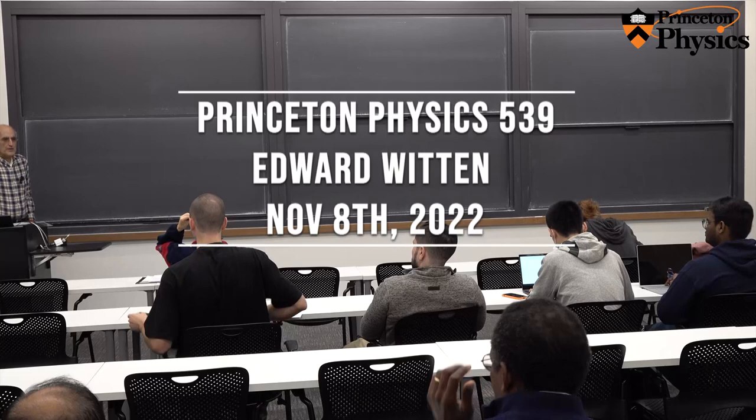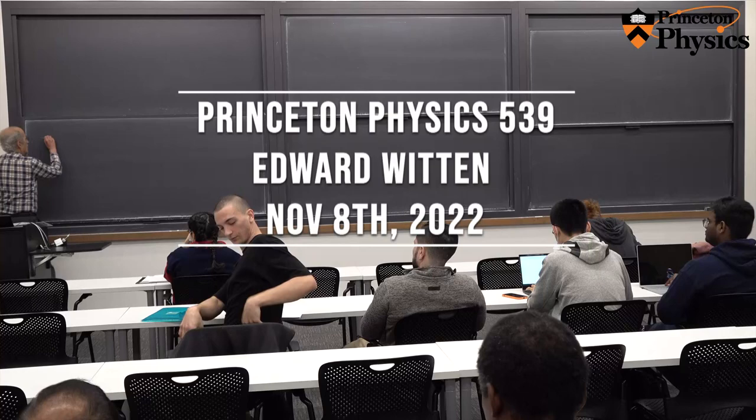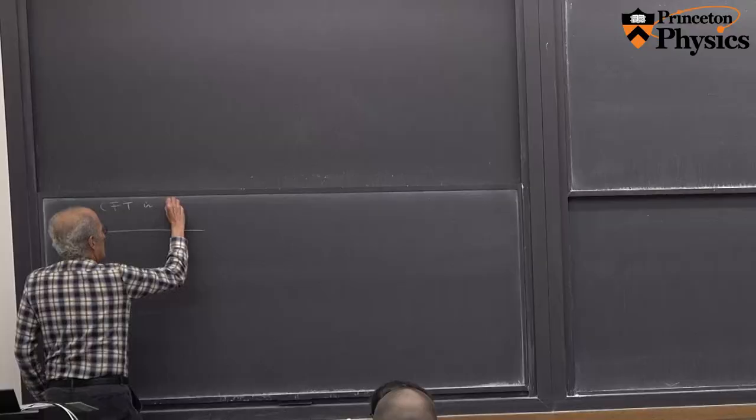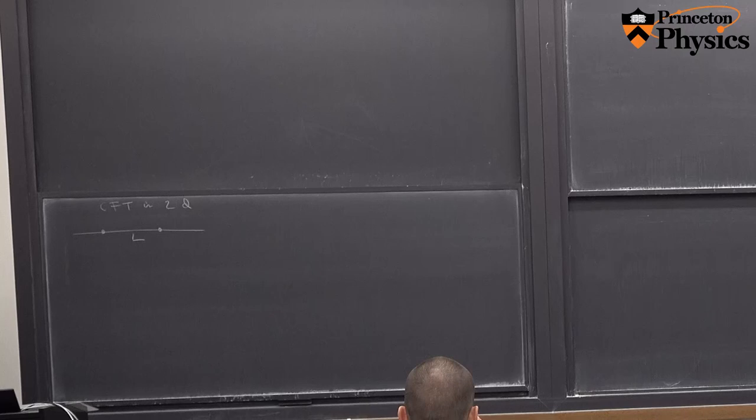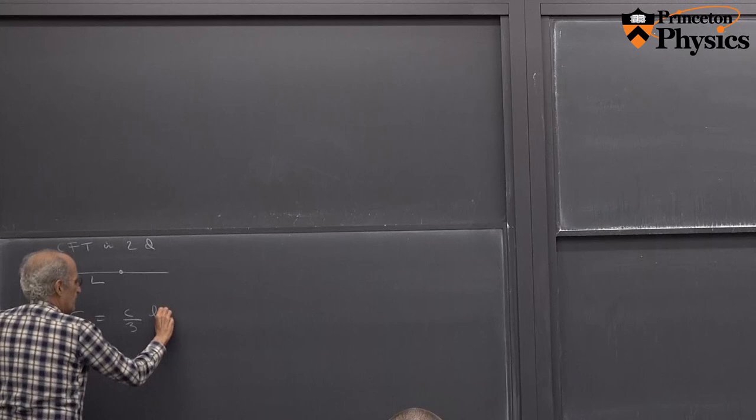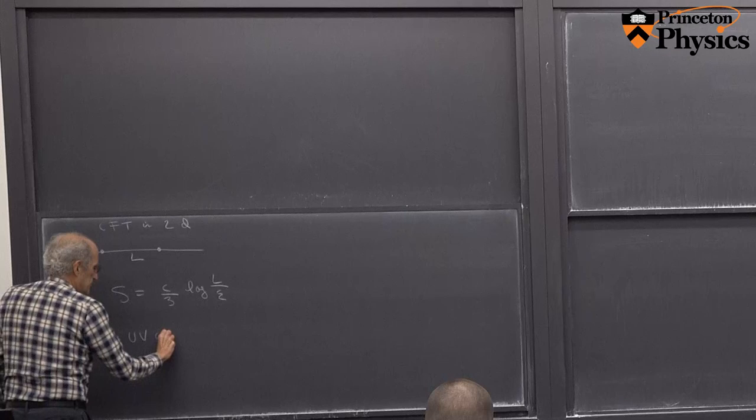Because of a question asked after the last lecture, I want to begin with a comment about what we discussed compared to a previous lecture. In a conformal field theory in two dimensions, we've discussed two problems. One was an infinite line where we picked a segment of length L, and then we computed that the entropy was c over 3 times the logarithm of L over epsilon, where epsilon is a UV cut-off.